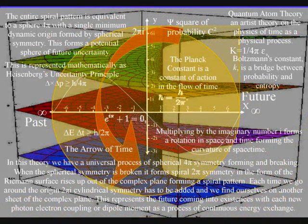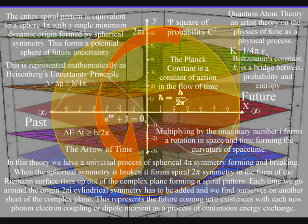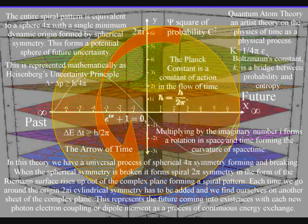When the spherical symmetry is broken, it forms spiral symmetry in the form of the Riemann surface, rising up out of the complex plane forming a spiral pattern.